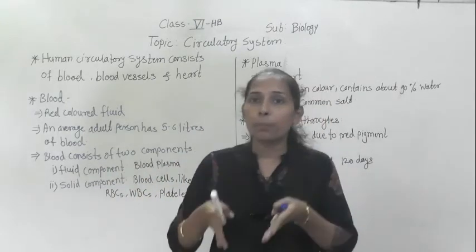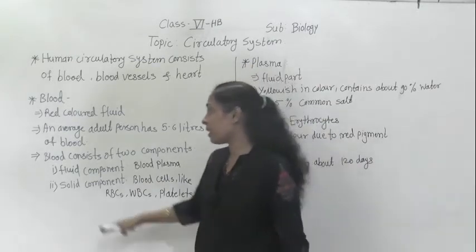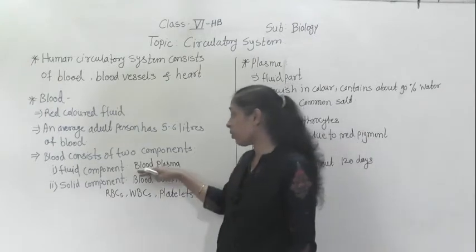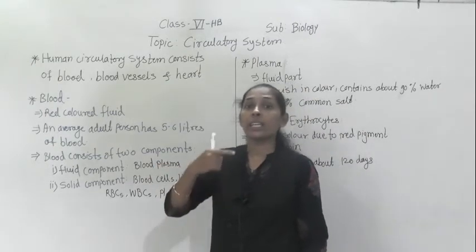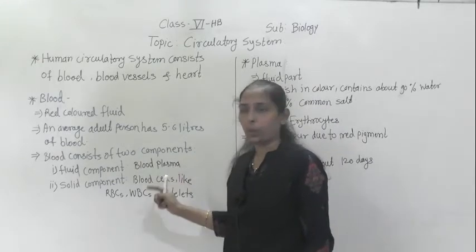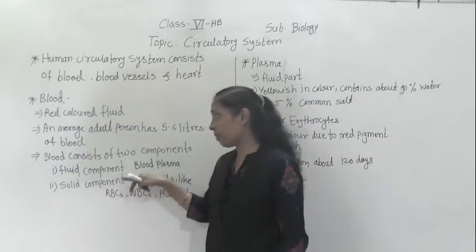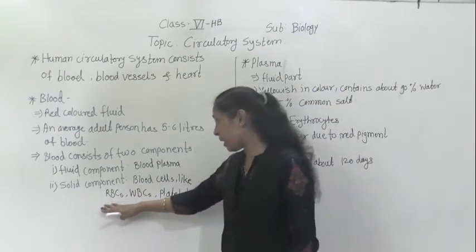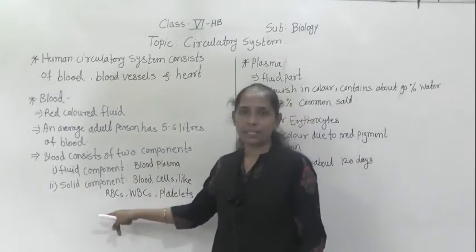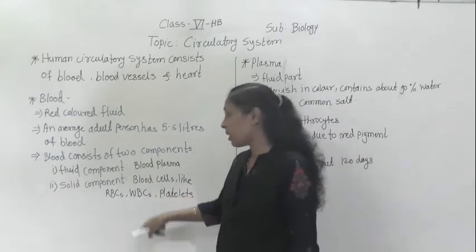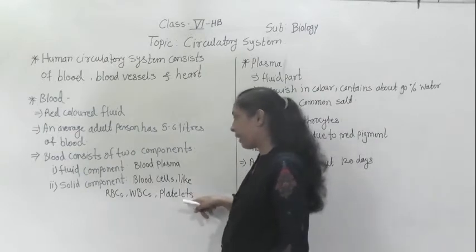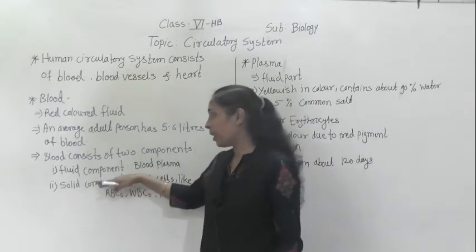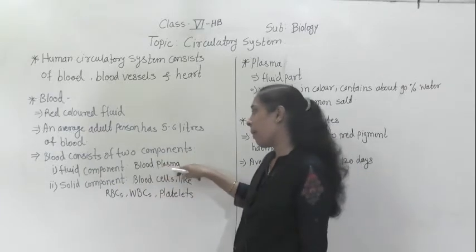The liquid component of blood is blood plasma. The blood is in a fluid state because of this blood plasma. The solid components are blood cells — RBCs, WBCs and platelets. RBCs means red blood cells, WBCs means white blood cells, and the third one is platelets.